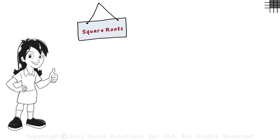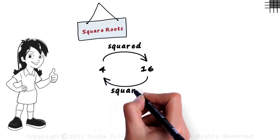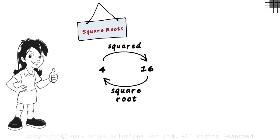Consider any number, say 4. 4 when squared gives us 16, and the square root of 16 gives us 4. Well, that's your concept.